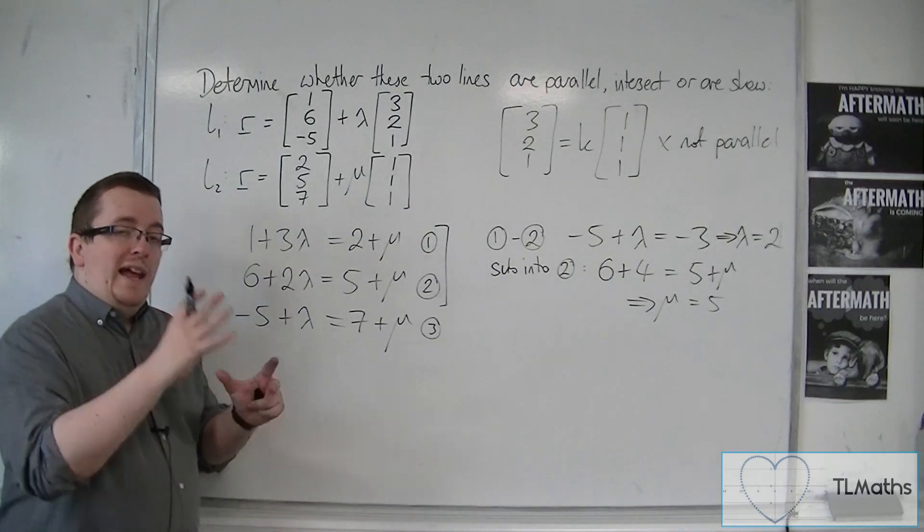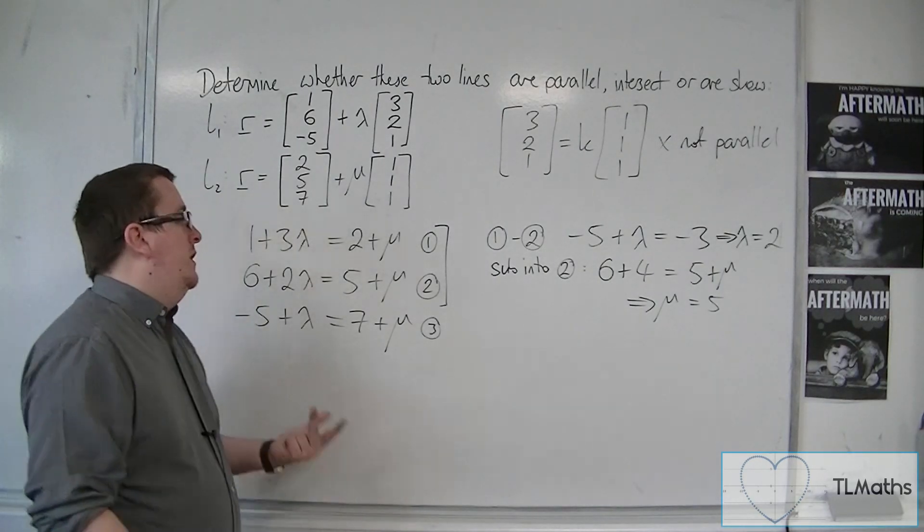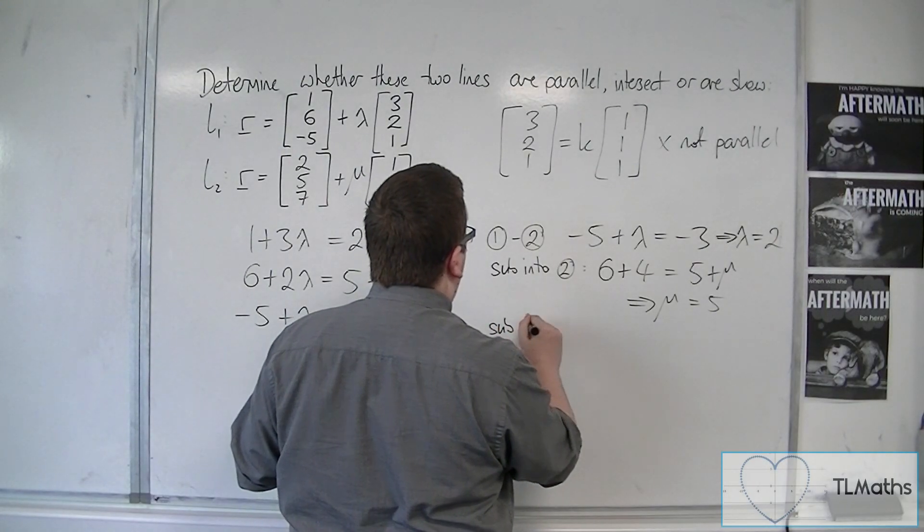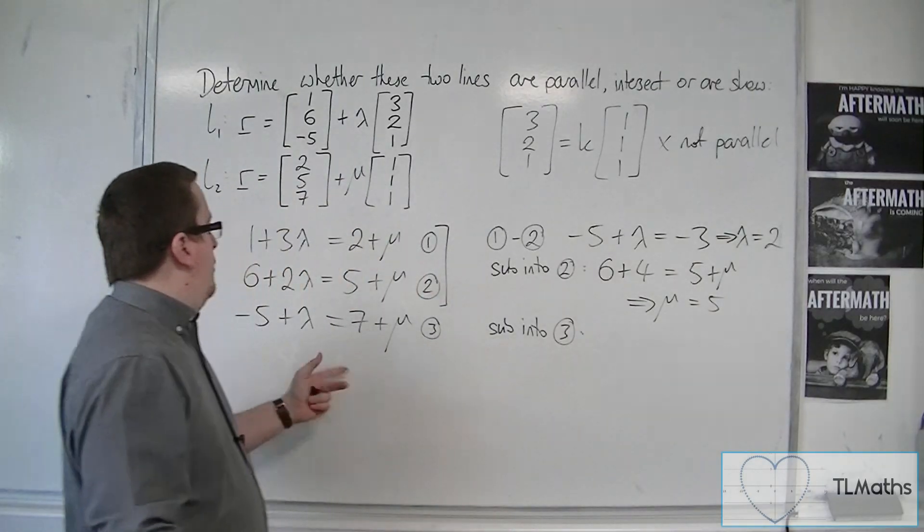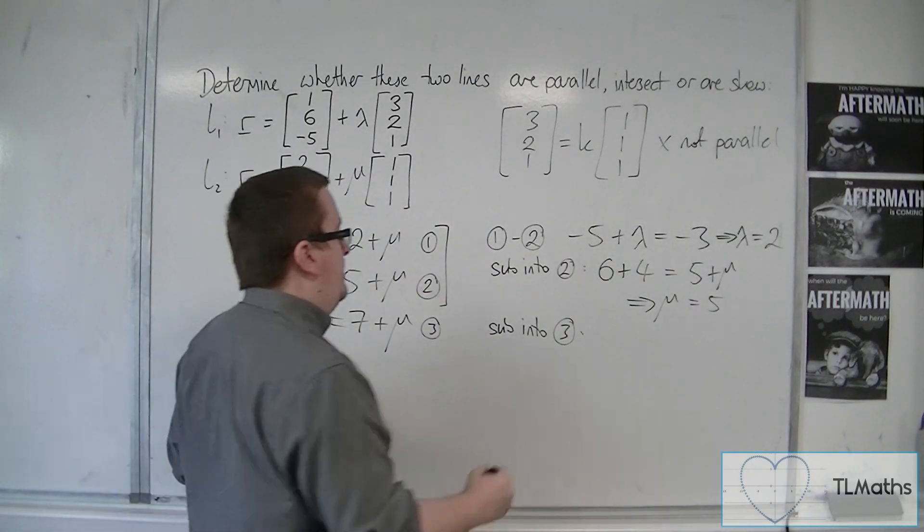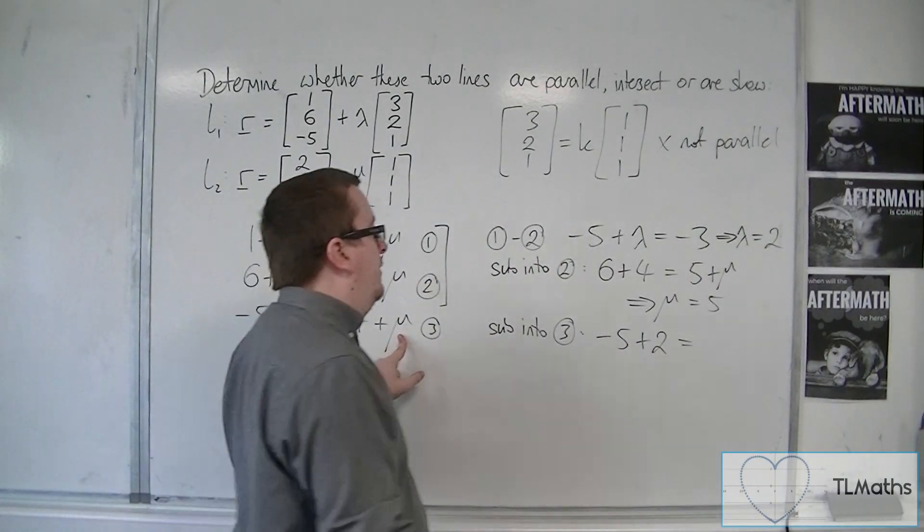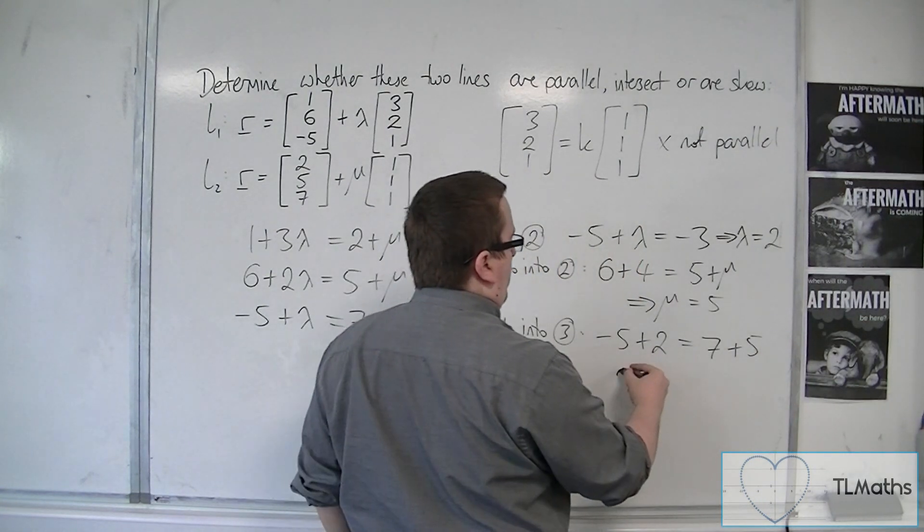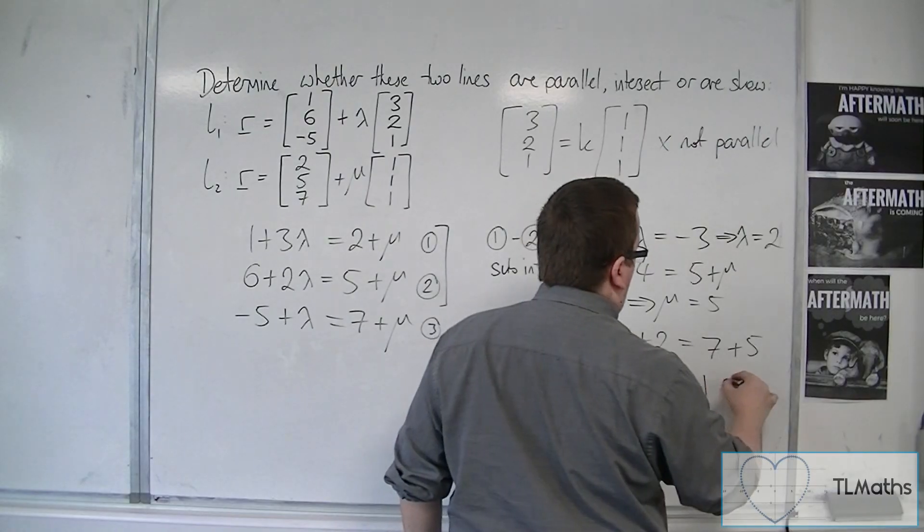Now that you've got a lambda and a mu, you now need to check whether they work in equation 3. So we need to sub into 3. So we've got minus 5 plus lambda, so minus 5 plus 2, is equal to 7 plus mu, so 7 plus 5. So we actually have minus 3 is equal to 12.